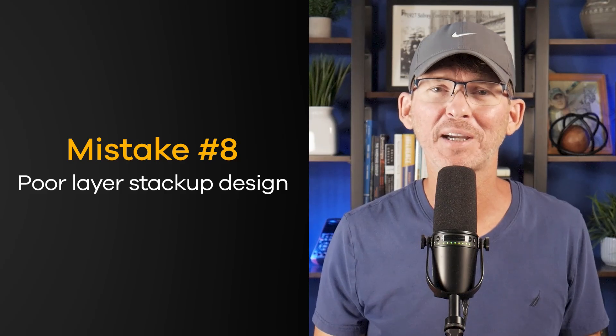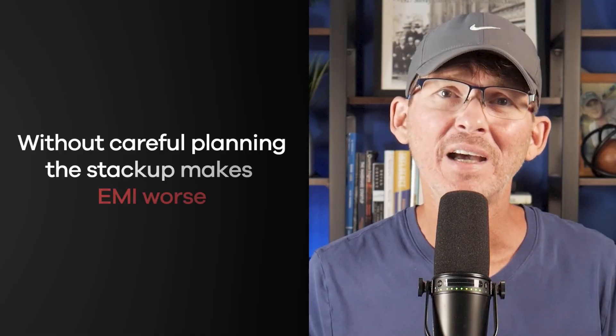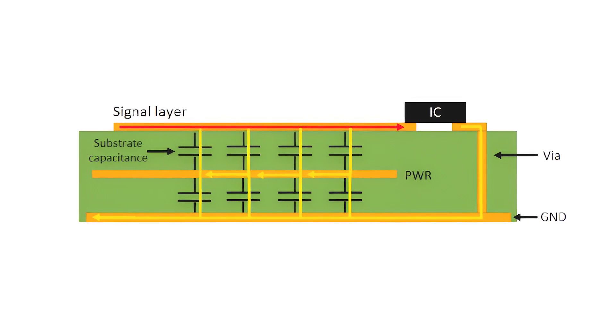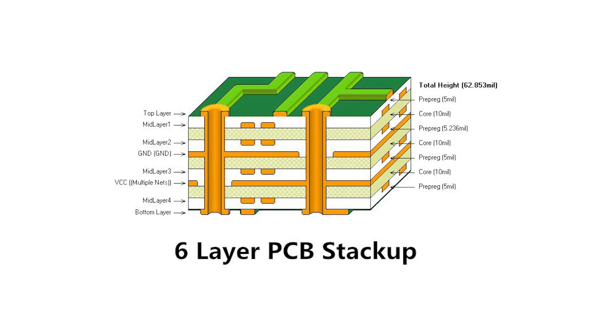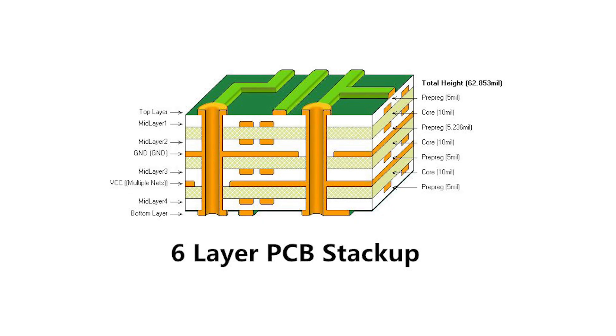Mistake number eight: poor layer stack-up design. Your PCB stack-up plays a critical role in controlling EMI. If signal layers are too far from ground, loop inductance increases and radiation rises. Many teams try to save costs by using a basic four-layer or even a two-layer board without an optimized stack-up, but without careful planning the stack-up can actually make EMI worse. Even worse is when power and signal layers are placed adjacent to each other without a solid ground between them — that causes return current paths to wander and increases loop area. A well-designed four- or six-layer stack-up with tight coupling between signal and ground minimizes emissions and simplifies routing. The difference may not show up in your lab, but it will show up during EMI testing.